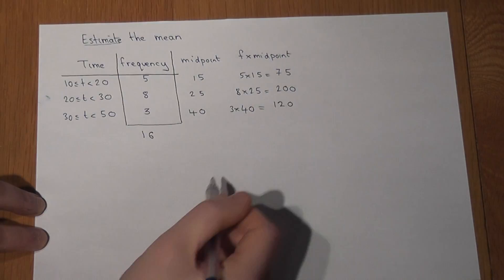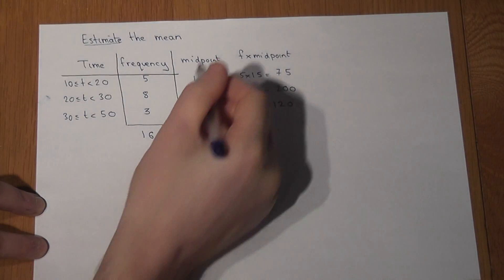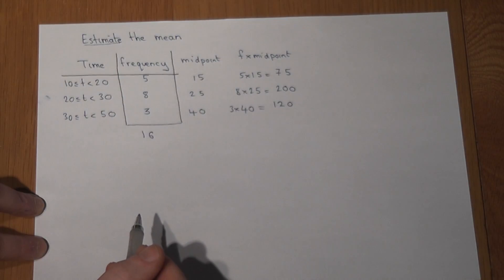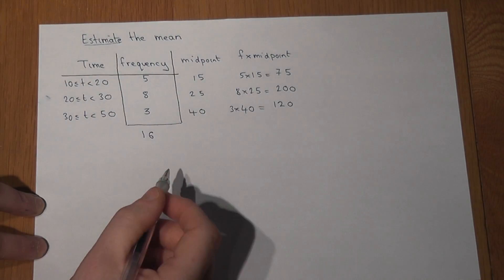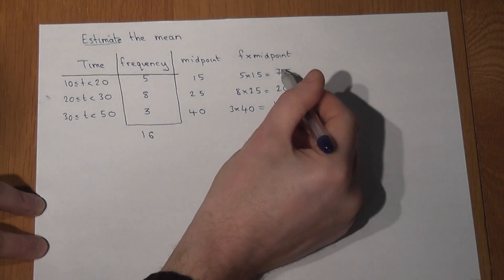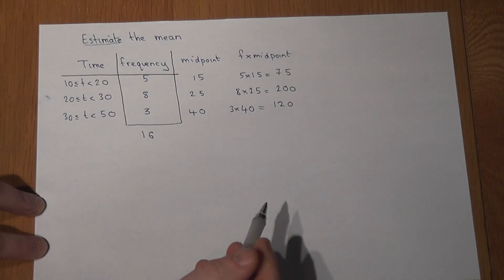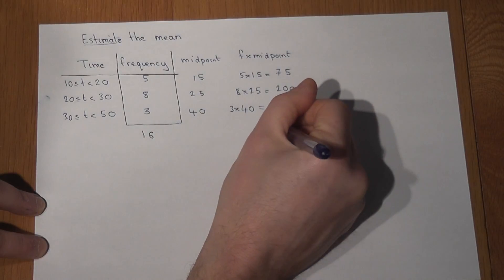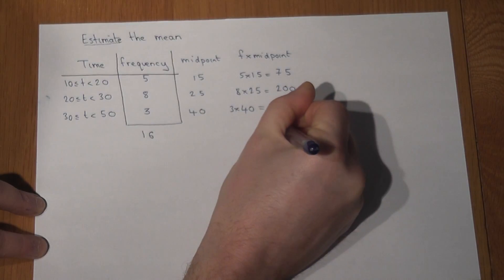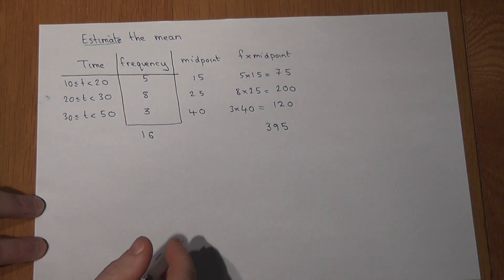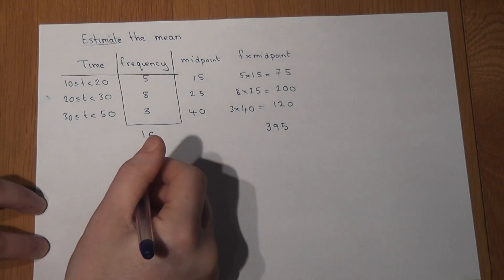Well, to find the total time, I add up these three calculations. So 75 plus 200 plus 120, which is 395. So the mean, or the estimate of the mean, is the total time divided by the number of people.